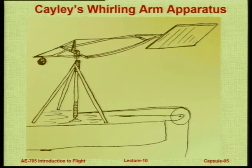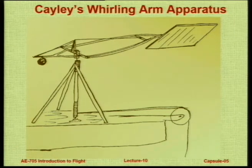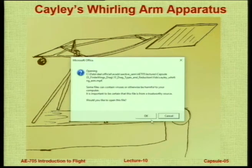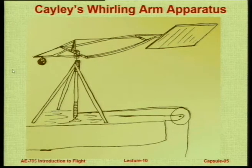Cayley was also a scientist who did experiments. Many years before the Wright brothers, Sir George Cayley designed and fabricated a whirling arm apparatus used to calculate forces acting on a body. This is a precursor to wind tunnels called the rotary arm or whirling arm apparatus. Such systems were also used to calculate forces acting on airships and other bodies.